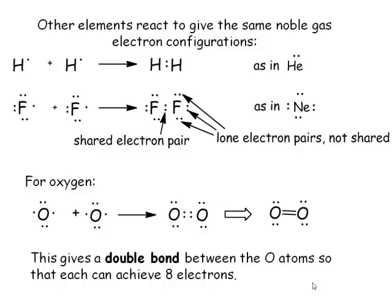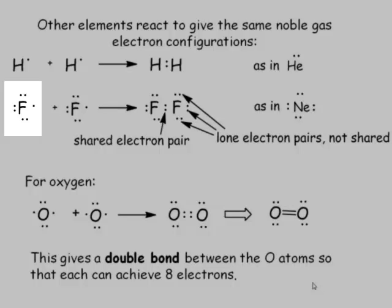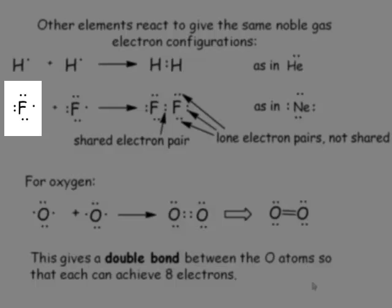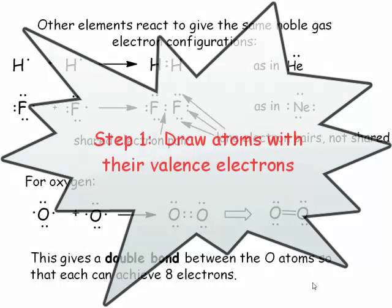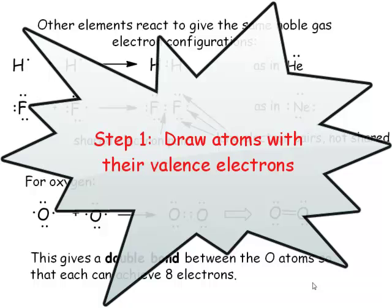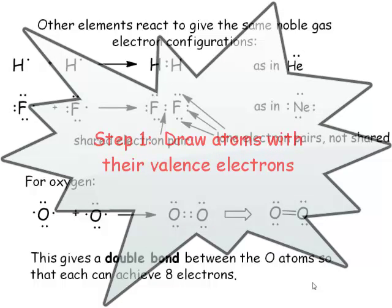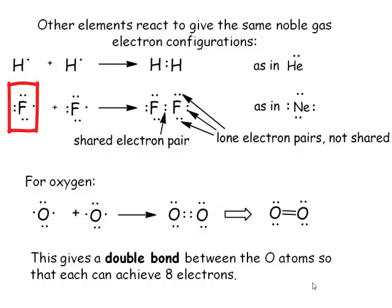Let's take a very simple example: Fluorine. It has seven valence electrons. If you were to construct a Lewis structure, the first step is to draw your atom with the number of valence electrons. Here's Fluorine with seven valence electrons. Here's a second atom of Fluorine with seven valence electrons.